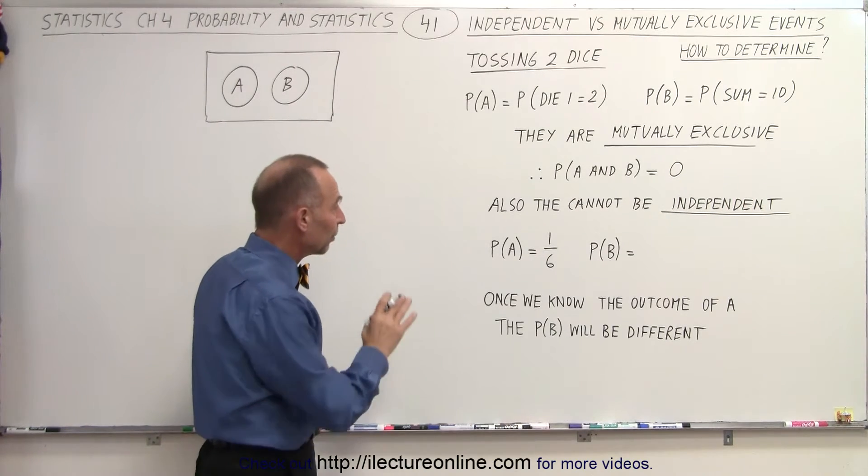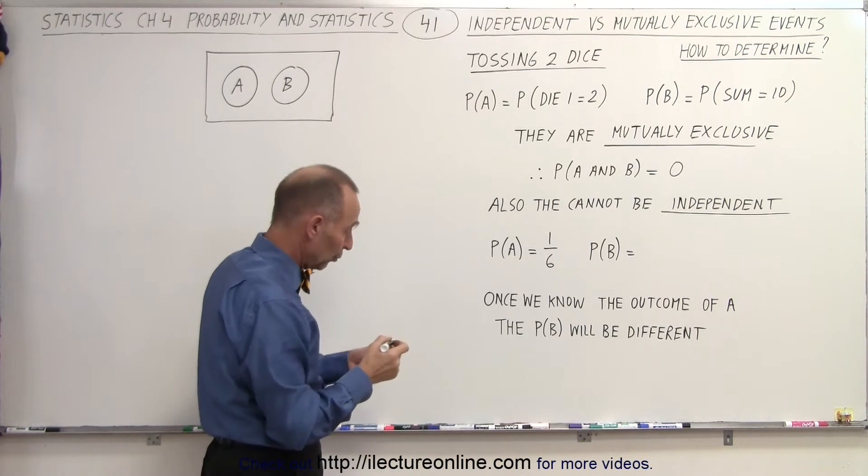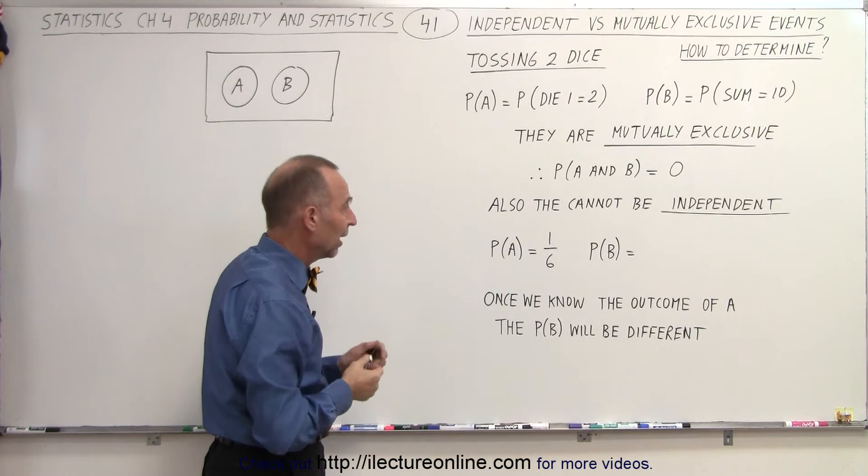Let's see now. We know that the probability of A occurring is 1 out of 6. One die equals 2 can only occur 1 out of 6 as a probability.